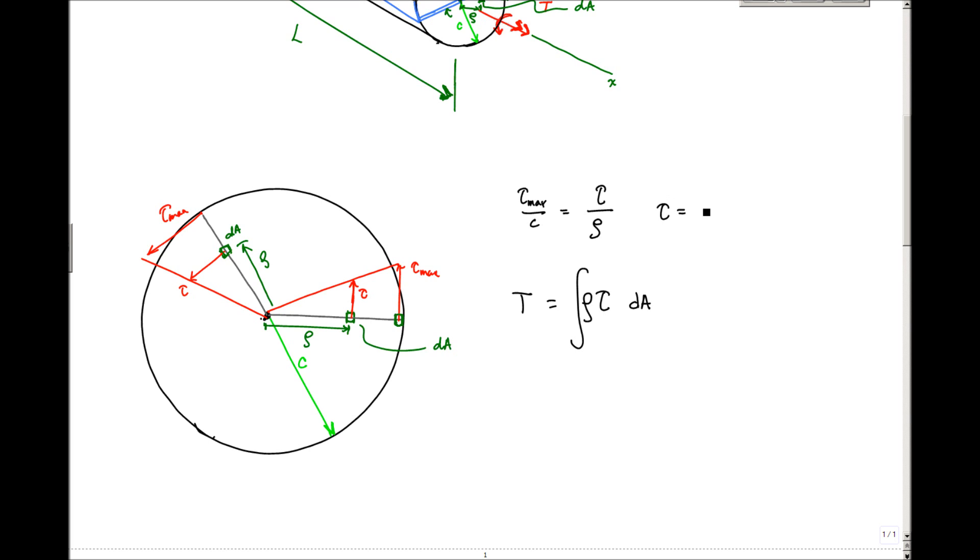And in this case, tau max is a specific value at the very end, or at the outer radius, or outer edge of my shaft, and C is also the outer edge, it's just the radius, these are all constants, and so this becomes this tau max over C times the integral of rho squared dA, and this right here probably looks like a moment of inertia, yeah, from statics?